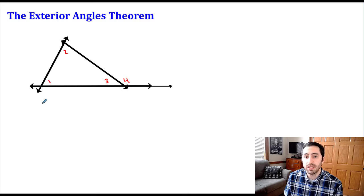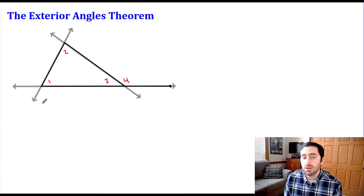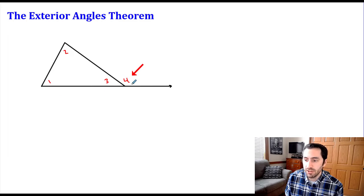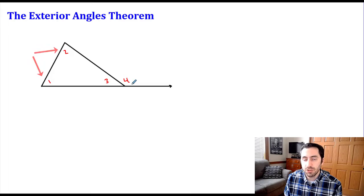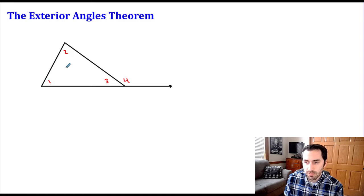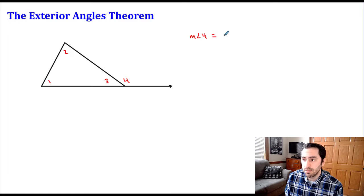We do have more than just this one exterior angle — I could extend any of the sides to create others — but the theorem we're looking at only deals with one at a time. The exterior angle theorem says that this exterior angle is equal to the sum of the two non-adjacent interior angles. Angle three is adjacent to angle four, so angle one and angle two are the two non-adjacent ones. The measure of angle four equals the measure of angle one plus the measure of angle two.